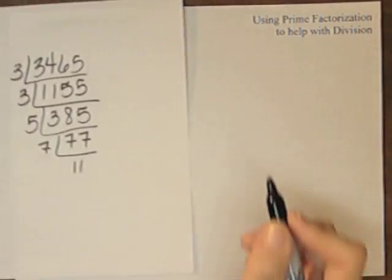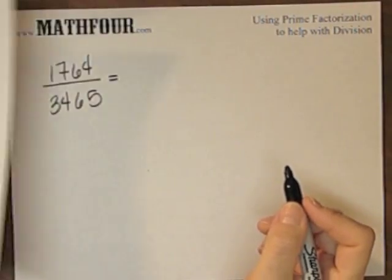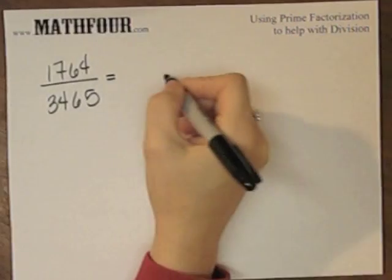I have previously factored. That's my denominator, 3 times 3 times 5 times 7 times 11.